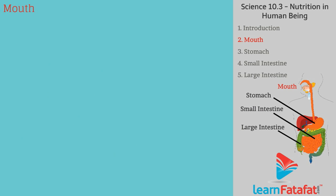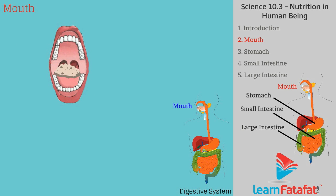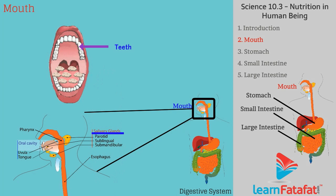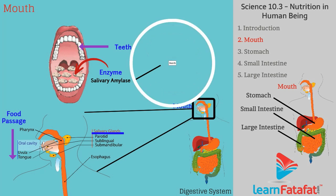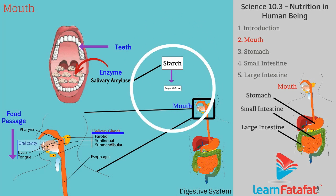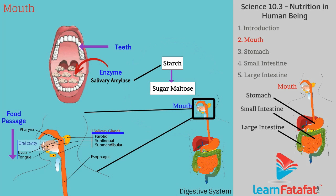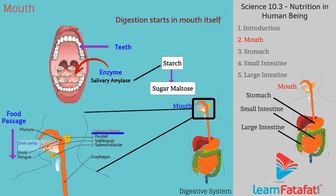In the mouth, large food pieces are broken down into small particles with the help of teeth. Saliva secreted by the salivary gland wets the food so that it can pass through the alimentary canal. Saliva contains an enzyme called salivary amylase that breaks down starch into the simple sugar maltose. Thus, digestion starts in the mouth itself.